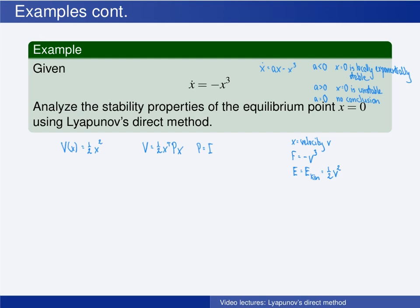Now pause the video and analyze the stability properties of the equilibrium point at the origin using Lyapunov's direct method. We have chosen a Lyapunov function candidate. The second step is to determine whether this satisfies the conditions for being a Lyapunov function, and preferably a strictly Lyapunov function for the equilibrium point. The function is clearly continuously differentiable, and thus it satisfies the first condition.